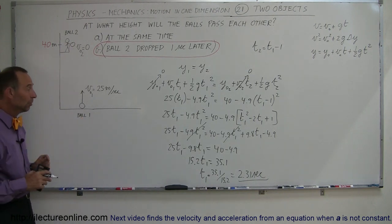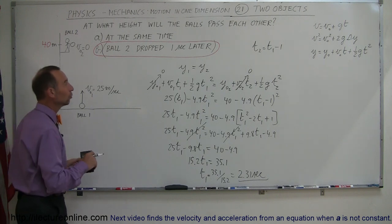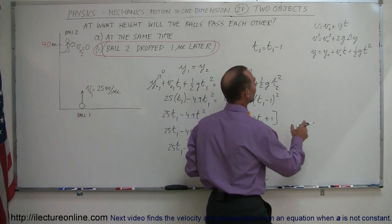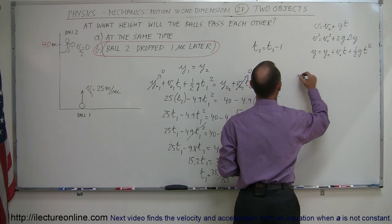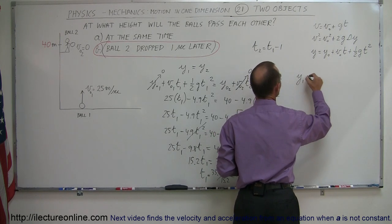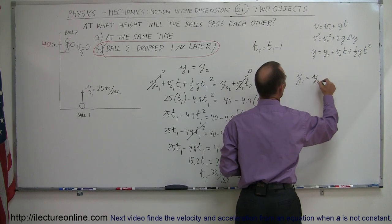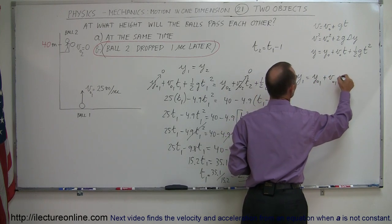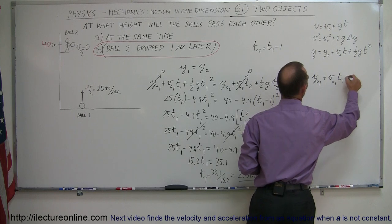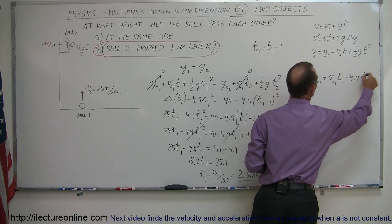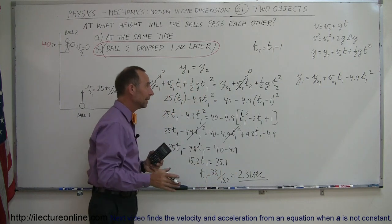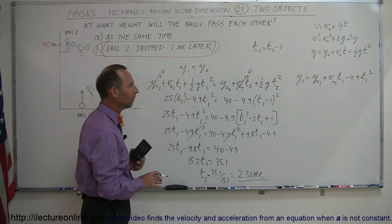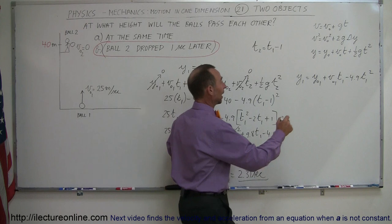What is the height at that moment? Let's plug in t1 to the equation. So what we're going to do is take this equation and plug in t1. So we have y1 equals y initial 1 plus v initial 1 times t1 minus 4.9 t1 squared. Notice that the first ball starts at height of 0 meters, so that goes to 0.